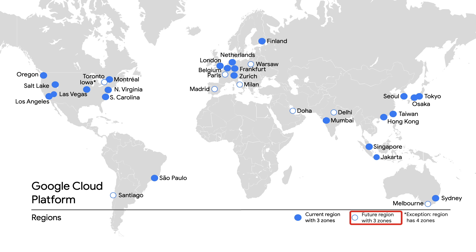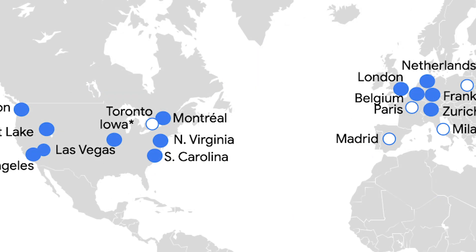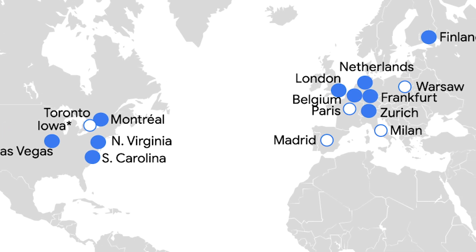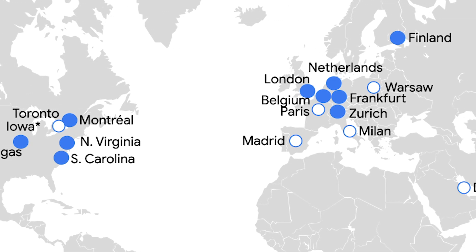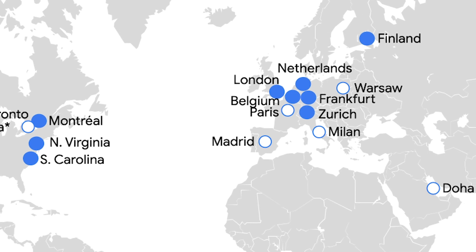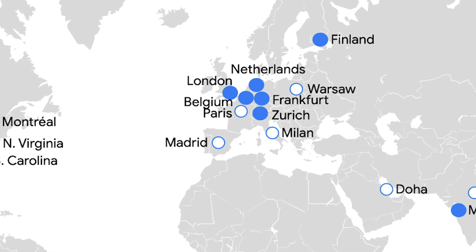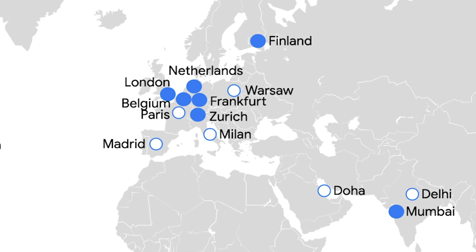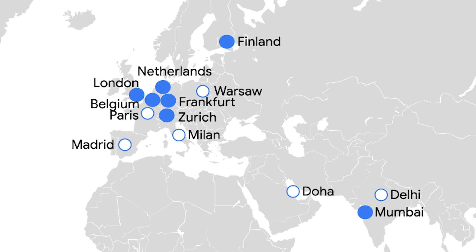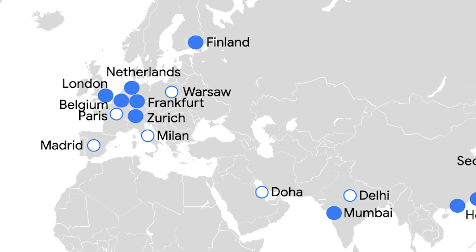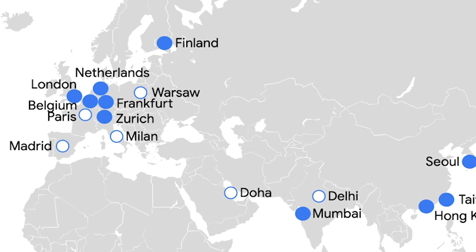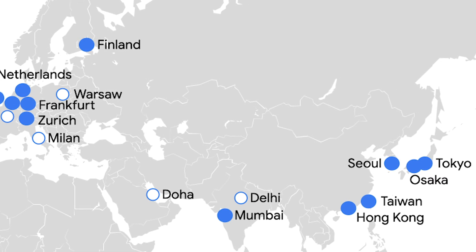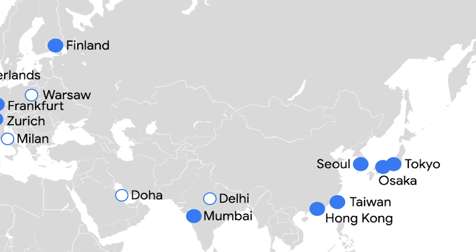Zones usually have individual power, cooling, network, and control planes that are isolated from other zones. If a single failure event were to occur — for example, a bulldozer cutting through a network cable during some nearby construction work — it would affect only a single zone. Every region in Google Cloud provides at least three isolated zones, which enables customers to design a high-availability architecture across multiple zones in the region of their preference, without being tied to selected parts of the world.